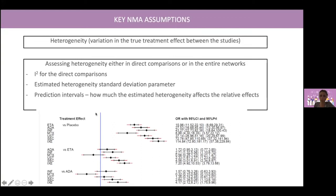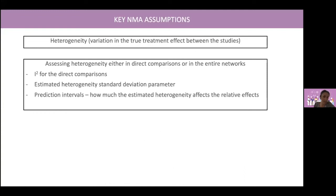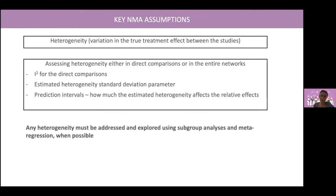High or significant heterogeneity, as well as high or significant incoherence, will undermine the conclusions drawn from your network meta-analysis. In case of any heterogeneity or incoherence, these must be addressed and explored using subgroup analysis and meta-regression when possible.